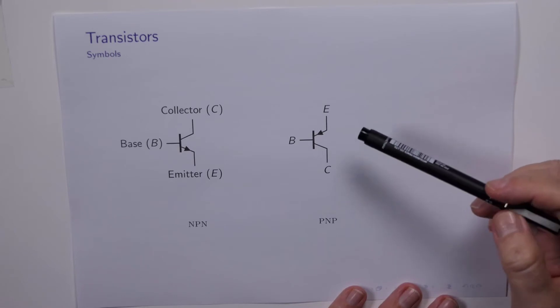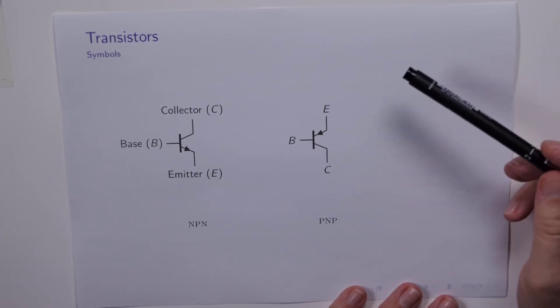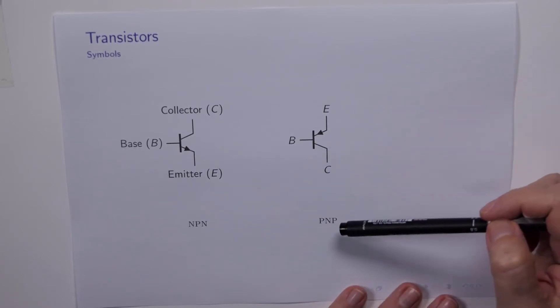So what does a transistor look like? Well, on paper it looks like this. There are basically two flavors of what we call bipolar junction transistors: the NPN and PNP.